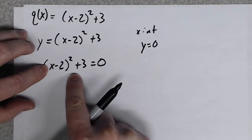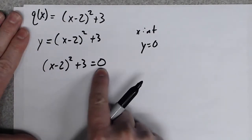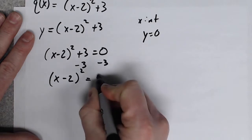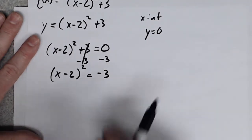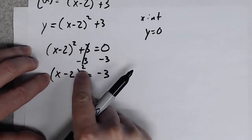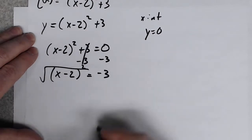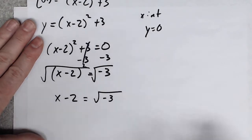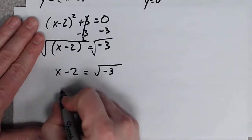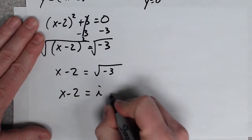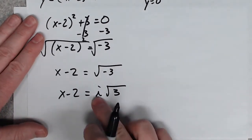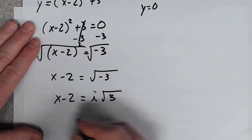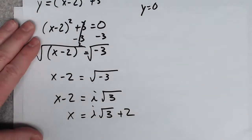If it's in vertex form it's so much easier — you can just solve for x directly. So subtract 3 from both sides: (x minus 2) squared equals negative 3. To undo the power of two you take a square root of both sides, which removes the square, but then you get the square root of negative 3 — and the square root of negative 3 is a non-real, imaginary number. So you can't solve for x.